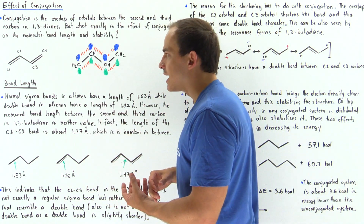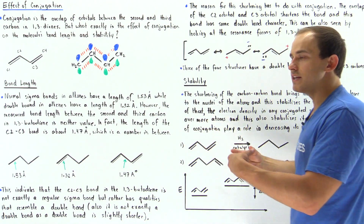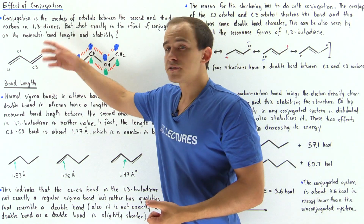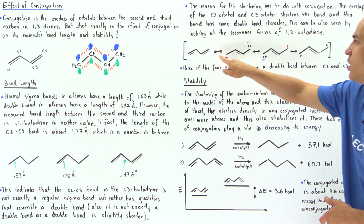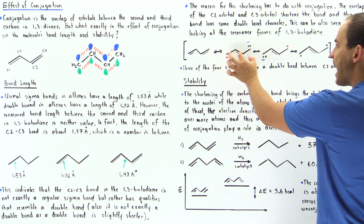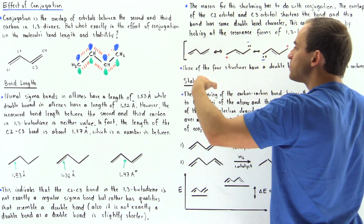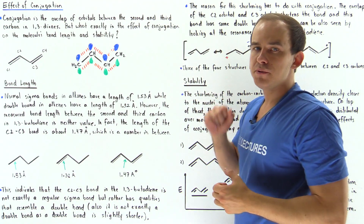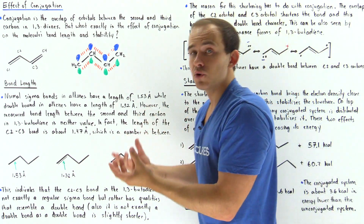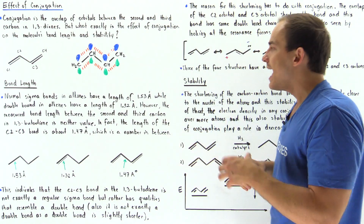We can also visualize that the bond between the second and third carbon in 1,3-butadiene has characteristics of a double bond by looking at the resonance-stabilized structures. This molecule has four resonance-stabilized structures. If we look at three of these structures, we see that we have a double bond between the second and third carbons. Because the actual structure of 1,3-butadiene is intermediate between all these forms, the properties of this bond between C2 and C3 lie somewhere in between a single sigma bond and a double bond.